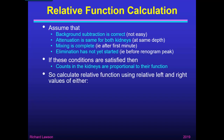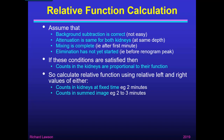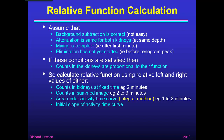If all those conditions are satisfied, then the counts recorded in the kidneys are proportional to their function, and we can calculate relative function using the relative left and right values of any of these parameters. We could use the counts in the kidneys at a fixed time, for example two minutes, providing background subtraction has been done properly. Or we could look at the counts in a summed image over an extended time from maybe two to three minutes. Or we could look at the area under the activity-time curve — that's known as the integral method. We could also use the initial slope of the activity-time curve, the rising part of the renogram, though measuring the slope of a curve is not that straightforward.